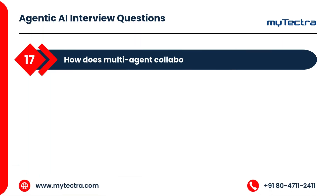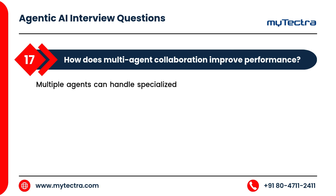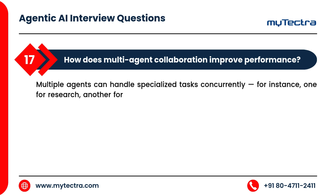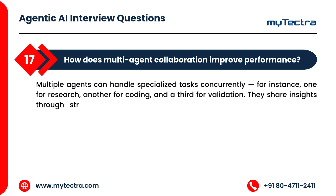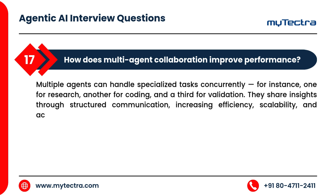How does multi-agent collaboration improve performance? Multiple agents can handle specialized tasks concurrently — for instance, one for research, another for coding, and a third for validation. They share insights through structured communication, increasing efficiency, scalability, and accuracy in complex workflows.